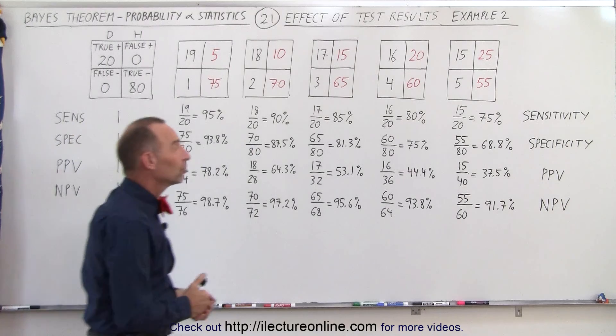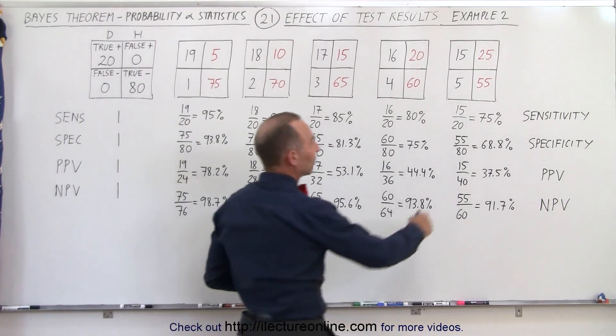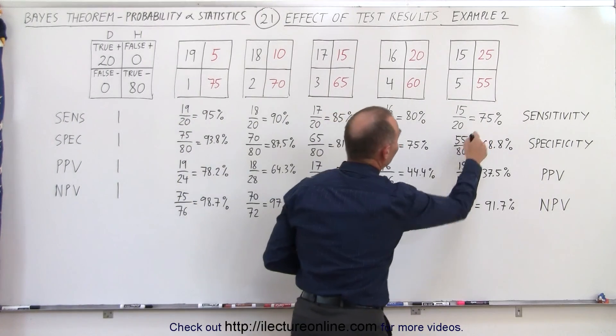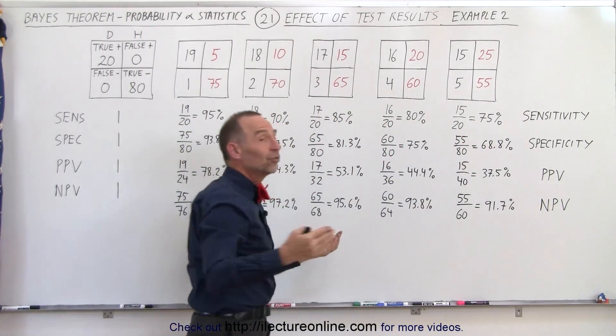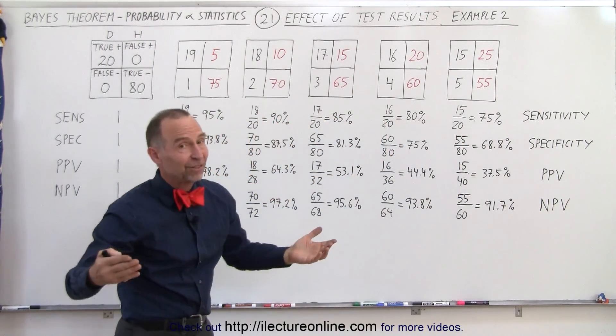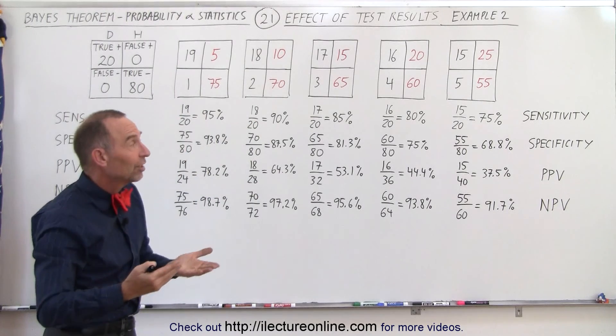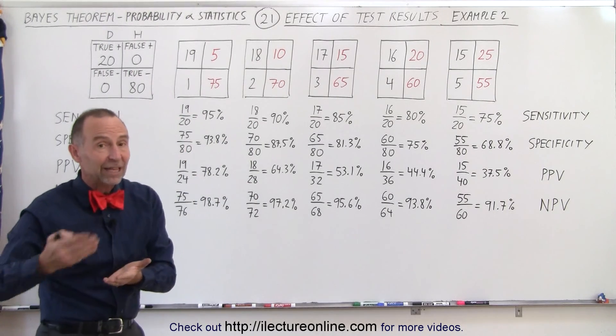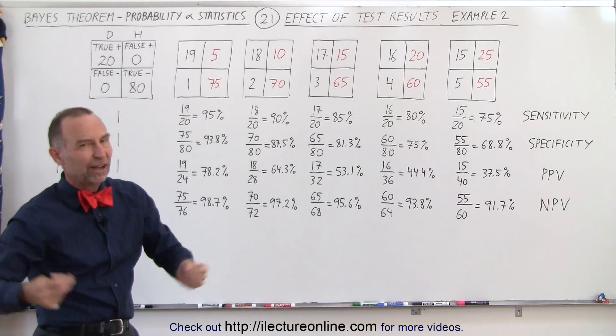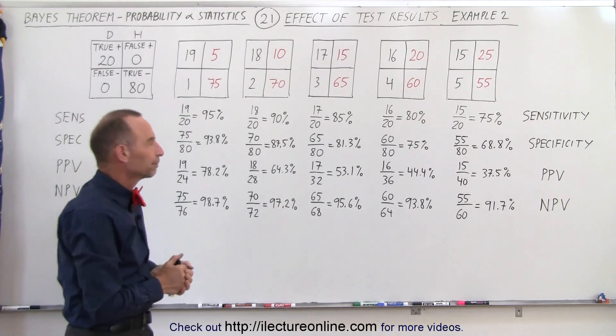Of course, when your sensitivity drops down to 75%, that means you're missing 25% that have the disease — they're flagged as negative when they're actually positive.